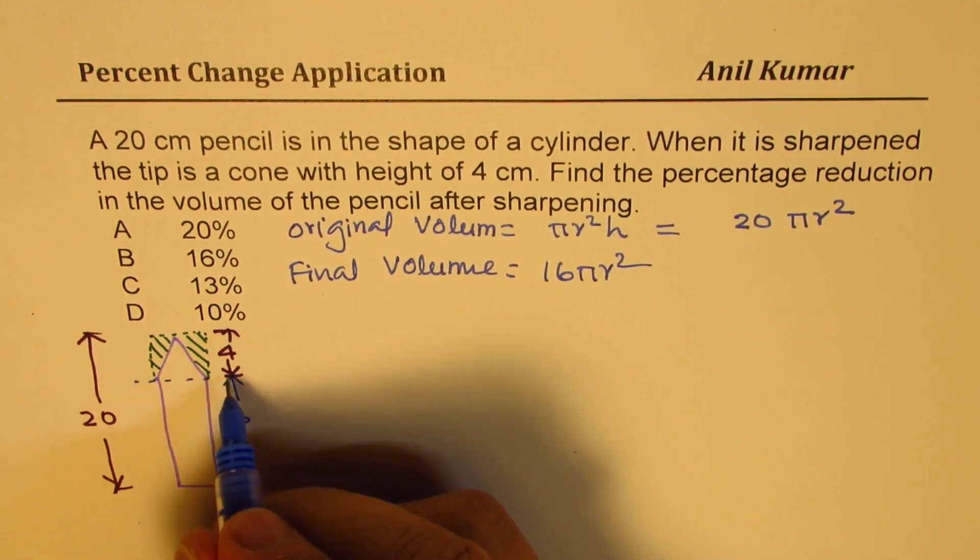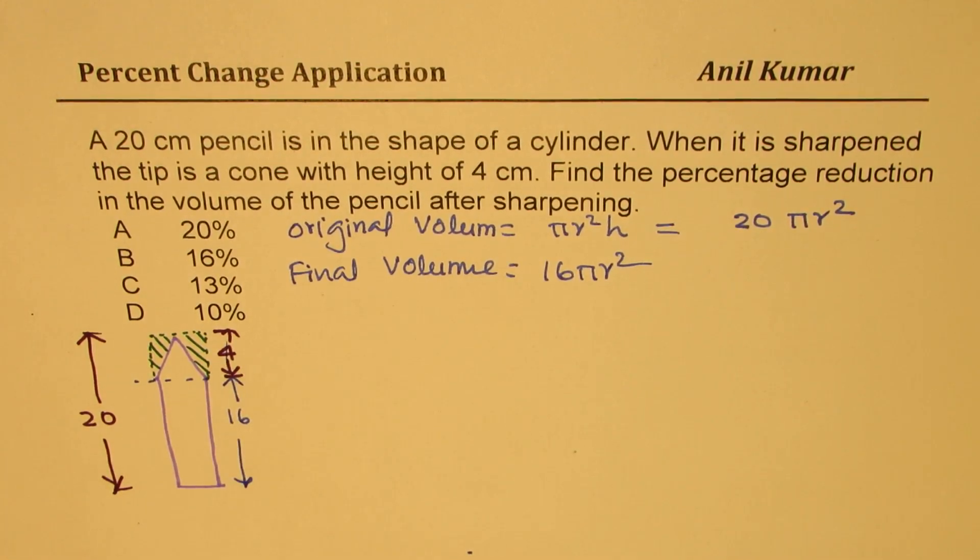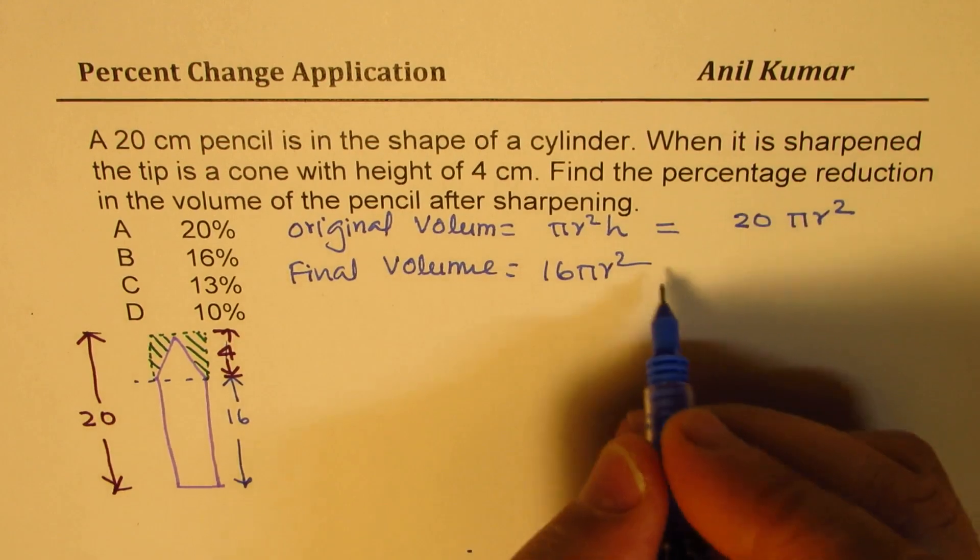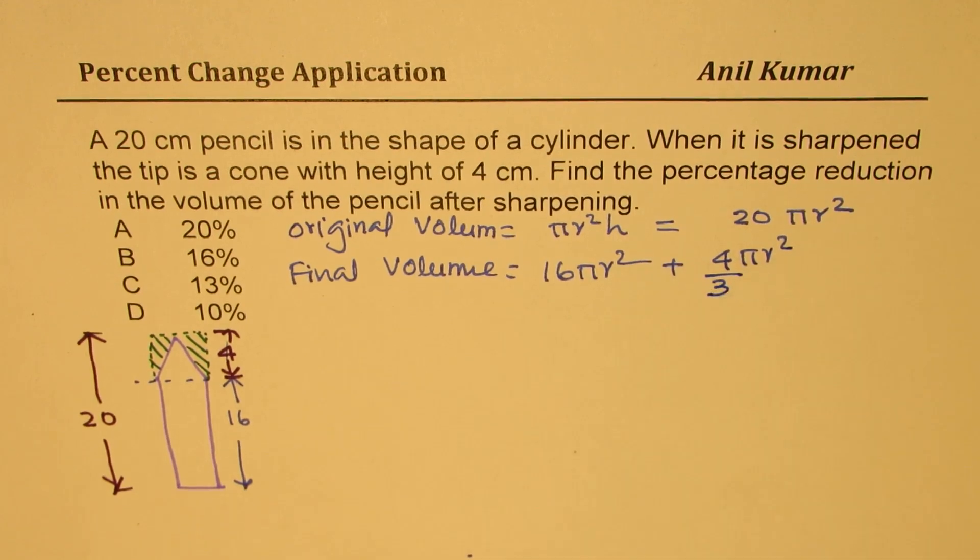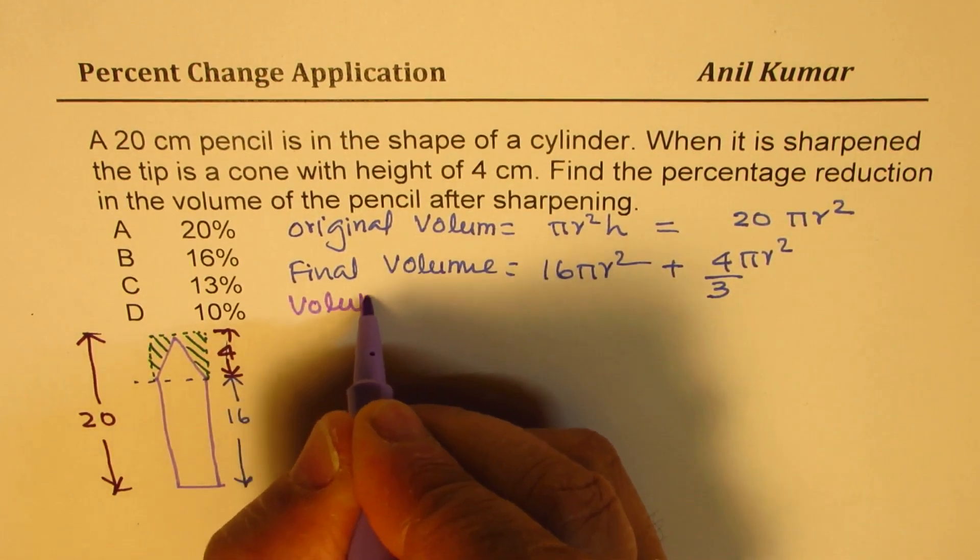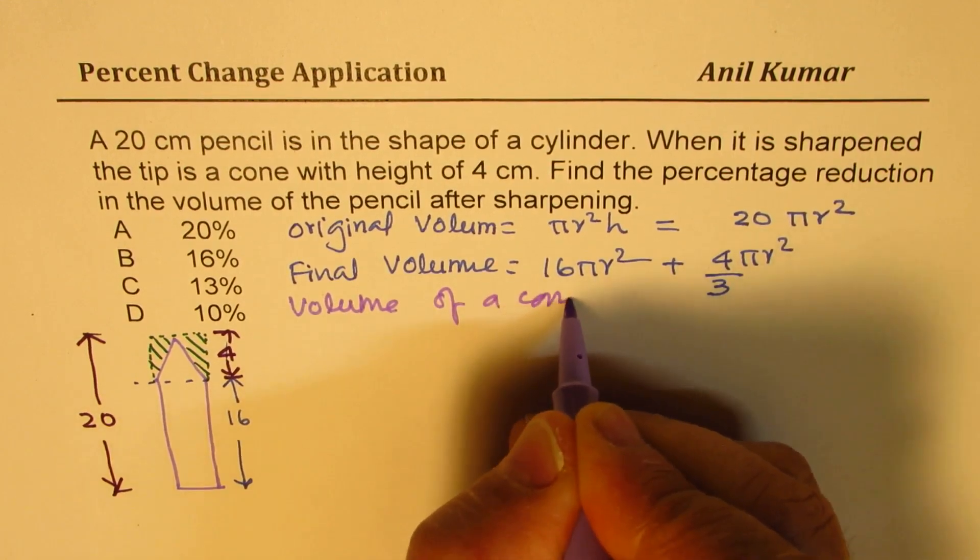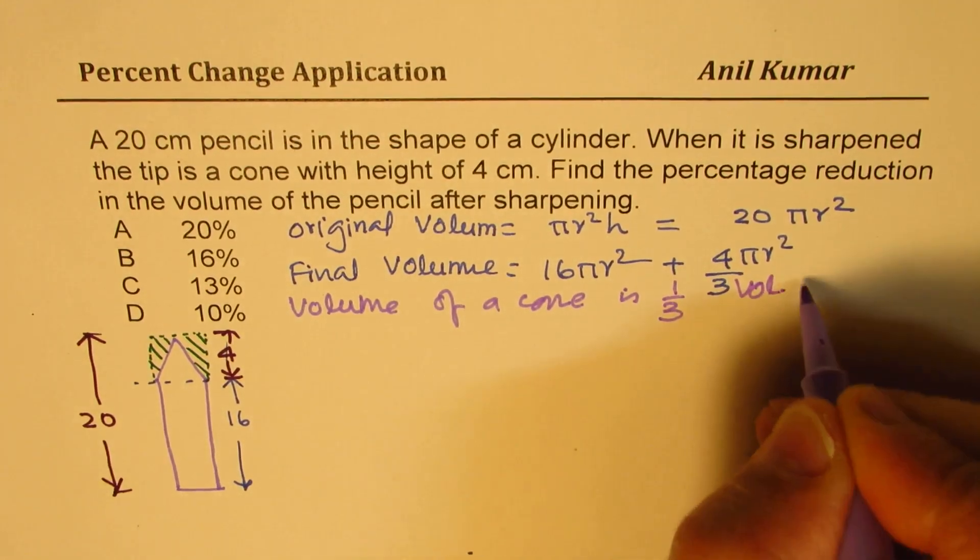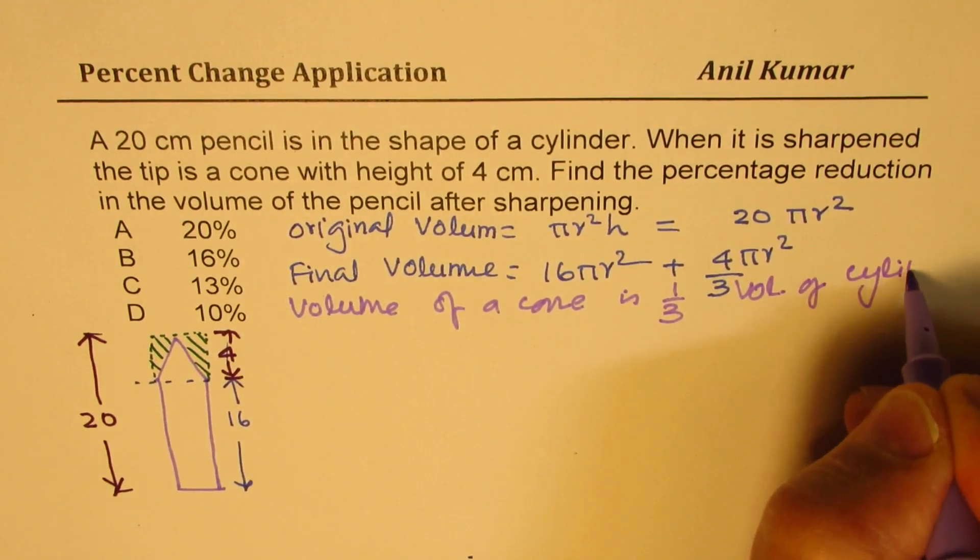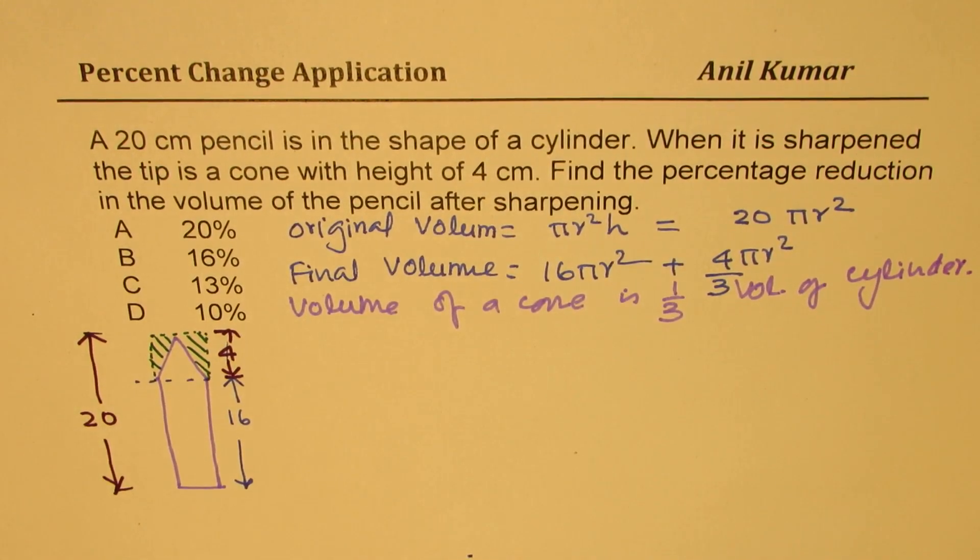For this height of 4, it is not 4πr², but it is one third of that. So plus, instead of 4πr², we have one third of this, since you know that volume of a cone is one third of the cylinder. So that portion on the top, the volume is only one third.